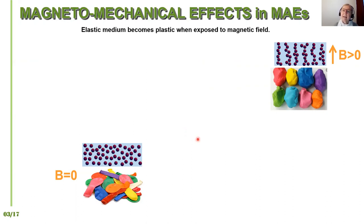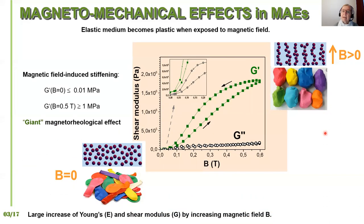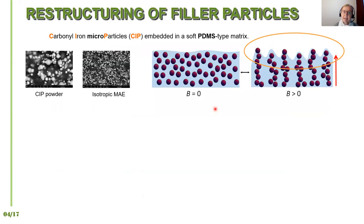When out of the magnetic field, magneto-active elastomers behave like very soft rubber balloons. When exposed to a magnetic field, they become like plastic or putty. In between low and high magnetic field, they strongly change their shear modulus and Young's modulus. This increase in shear modulus can be several orders of magnitude, and this effect is known as the giant magnetorheological effect.